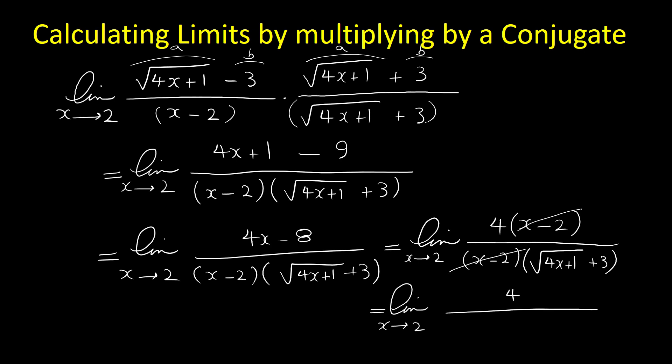After cancelling we have the limit as x approaches 2 of 4 over radical 4x plus 1 plus 3. Now if you plug in 2: 4 times 2 is 8, plus 1 is 9, radical 9 is 3, plus 3 is 6. So 4 over 6 is 2 over 3. The value of this limit is 2 over 3.